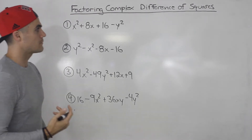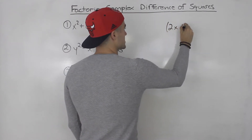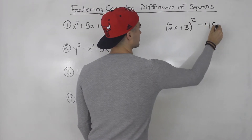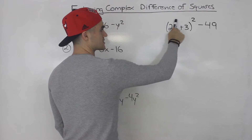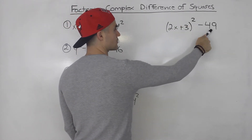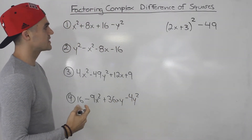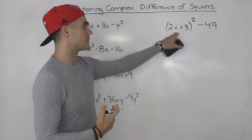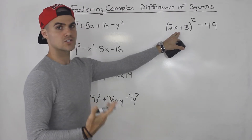If you remember from previous videos, I was giving expressions like this for example. This is a difference of squares because the square root of this whole expression is 2x plus 3, and the square root of this expression is 7. But sometimes you need to take a preliminary step in order to get it into this format.